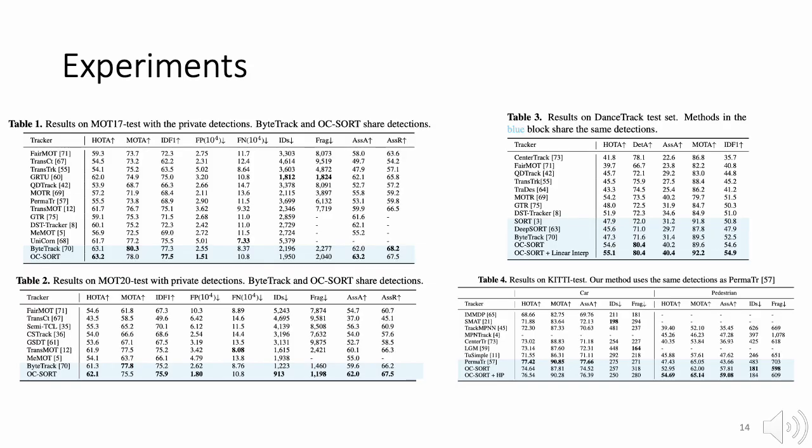Let's see the performance on multiple benchmarks. OC-SORT is a tracking-by-detection method, so it shares detections from other methods highlighted in blue. It achieves top performance on these benchmarks with faster than 500 FPS on a single CPU when the detections are given.